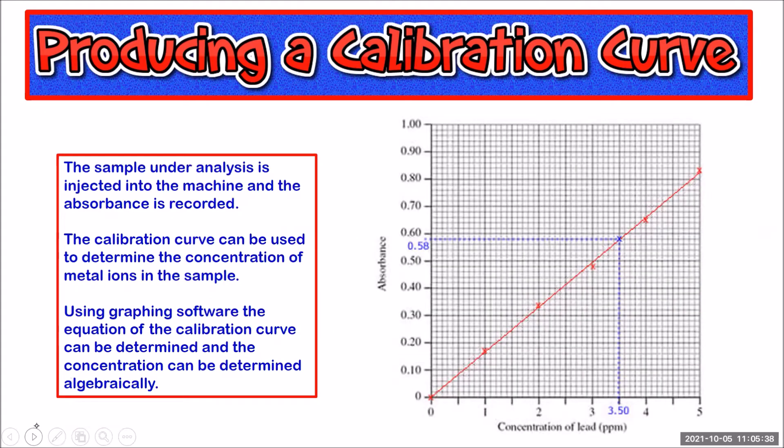In this analysis, the calibration curve is for lead ions. We see standard solutions of lead ions of one, two, three, four and five parts per million have been used to construct the calibration curve. A sample, it might have been of lake water, is collected and injected into the machine and its absorbance was found to be 0.58. Knowing that, we can head across to the calibration curve. We can read that the concentration of lead ions in that sample is 3.5 parts per million.